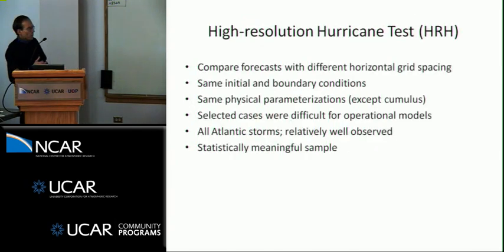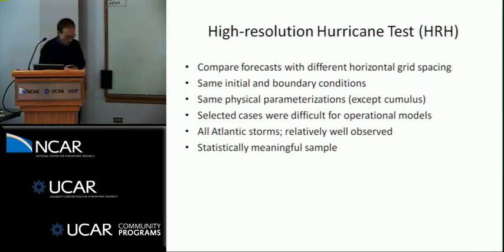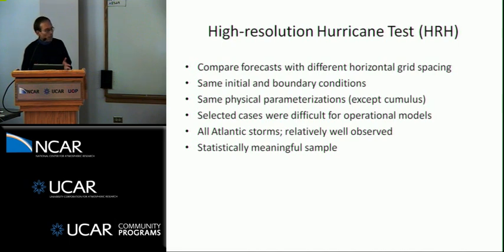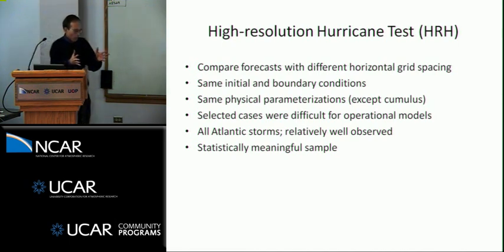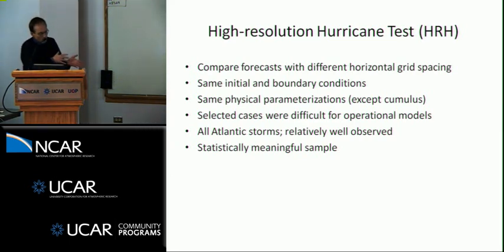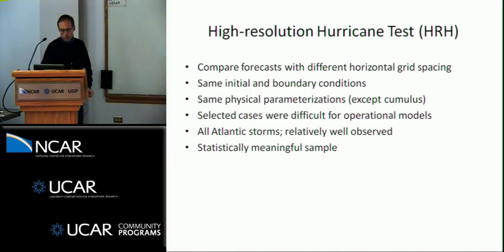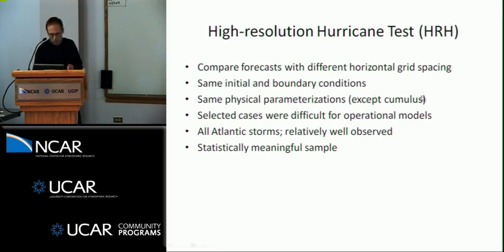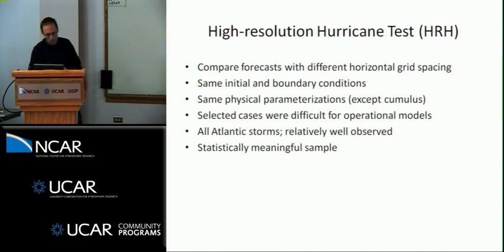What I'm going to talk about in most of the rest of the presentation is what was done last year: the high resolution hurricane test, where it was desired to see what exactly you get when you just go to high horizontal resolution — transitioning from coarser resolution with cumulus parameterization around 10-kilometer grid spacing down to something closer to 1-kilometer grid spacing. We used the same initial and boundary conditions and the same physics parameterizations, though they don't necessarily function the same way once you change the resolution. But the settings are all kept the same.